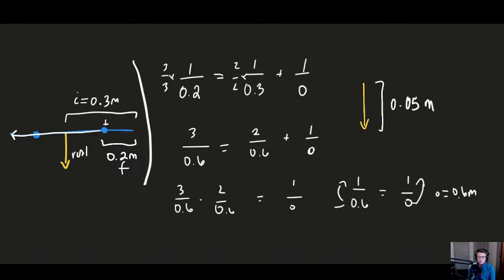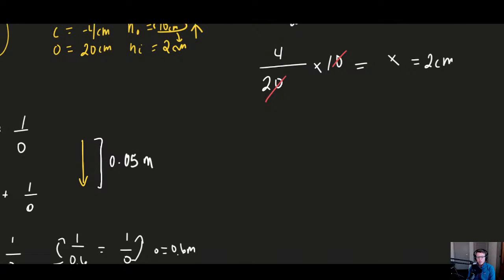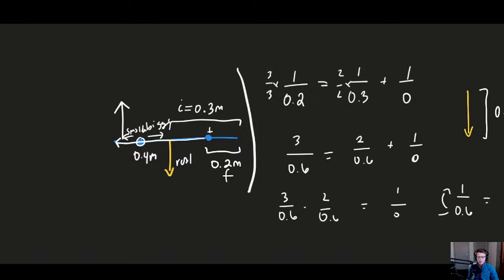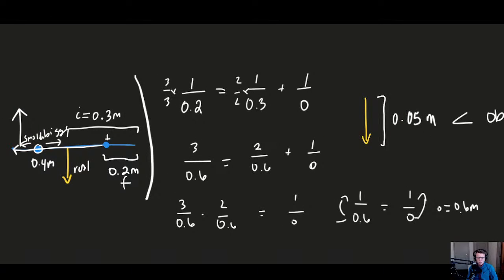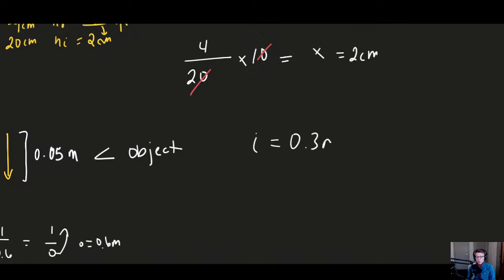Since 2F = 0.4 m and the object is at 0.6 m — outside 2F — we know the image must be smaller than the object. If the image height is 0.05 m, the object height must be larger. We can constrain answer choices: anything smaller than 0.05 m is eliminated. To solve: M = I/O = 0.3/0.6 = height of image / height of object, so 0.3/0.6 = 0.05/H_O. We can ignore the negative sign since we already know it's inverted.